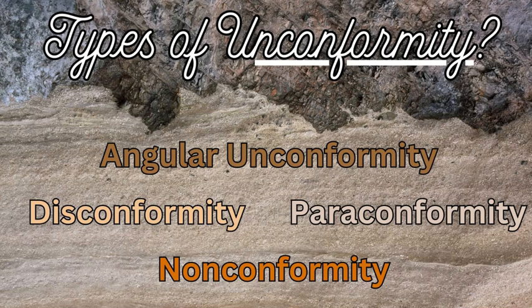So now we know what an unconformity is — it's that time period break between rock layers. There are three main common types: the angular unconformity, the disconformity, and the nonconformity. The paraconformity and the buttress unconformity are the ones that are not as common or are very rare.